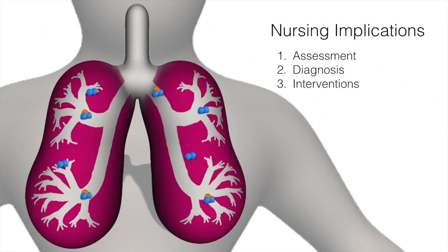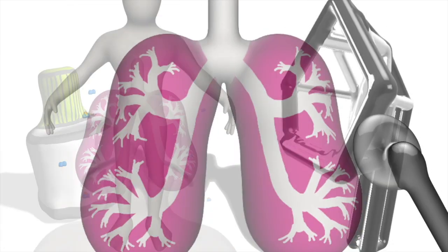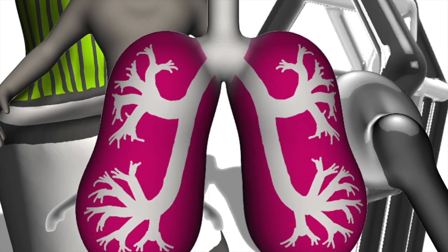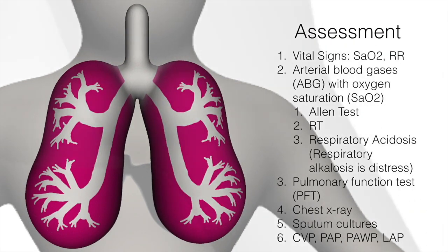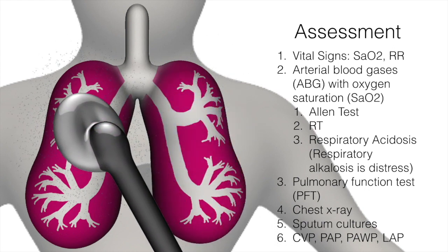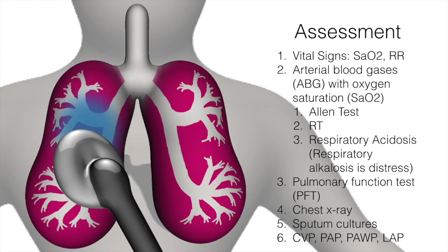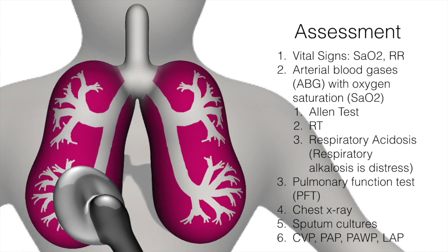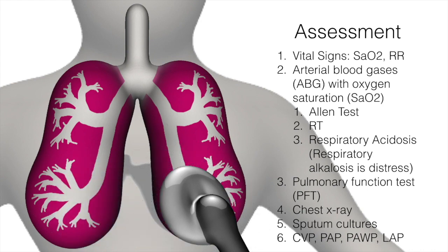Nursing implications for respiratory failure are divided into assessment, diagnosis, and interventions. Diagnostically: vital signs, oxygen saturation (likely low), ABGs showing respiratory acidosis (low pH, high CO2), pulmonary function tests showing decreased function, chest x-rays, sputum cultures if infection is suspected, and hemodynamic measurements including CVP, PAP, PAWP, and LAP to check blood pressure in the lungs.